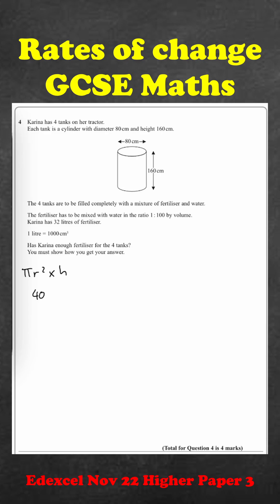We have the diameter is 80 which makes the radius 40. So pi times 40 squared times 160. We get 804247.72 centimeters cubed. So this is the total volume of one tank.